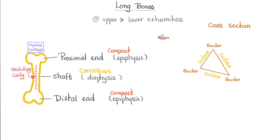First, long bones. Where do you find them? Upper limbs and lower limbs. Each long bone has a shaft — the diaphysis — which is cancellous bone. Then we have two ends, a proximal end and a distal end. The end is known as the epiphysis, and it's made of compact bone. Inside the shaft there is bone marrow in the medullary cavity. The outer shell is called the cortex; the inner part is called the medulla. If I take a cross section in this bone, I see a triangle with three borders and three surfaces.